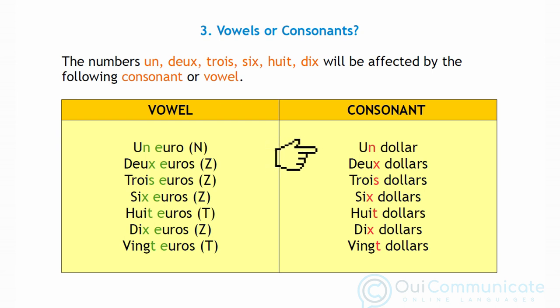In the other column, we'll use the word 'dollar', which starts with a d. These sound as follows: un dollar, deux dollars, trois dollars, six dollars, huit dollars, dix dollars, vingt dollars. You will have heard that the n of 'un' is now silent, as is the t of 'huit' and 'vingt', and none of the other numbers now have a z sound.